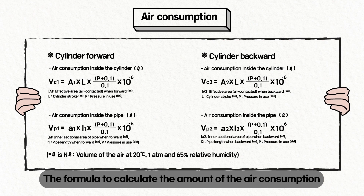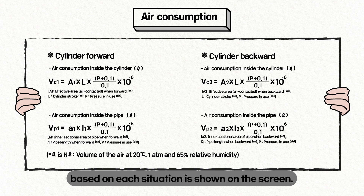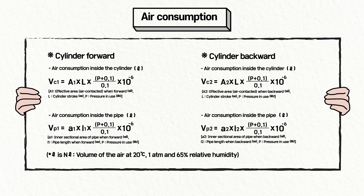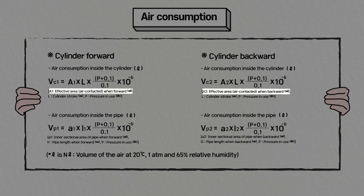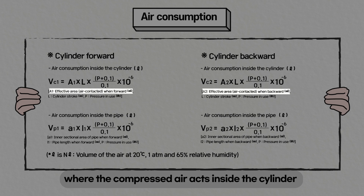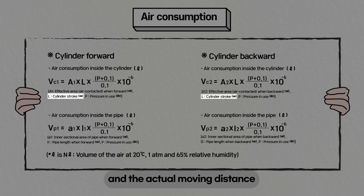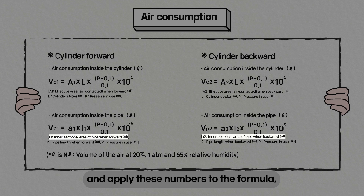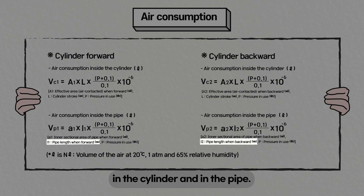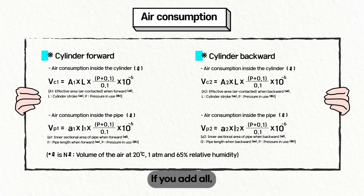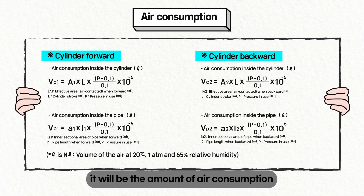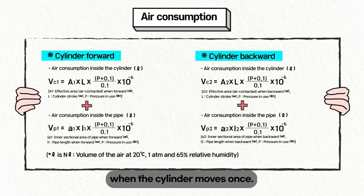The formula to calculate the amount of air consumption based on each situation is shown on the screen. If you analyze the area where compressed air acts inside the cylinder and the actual moving distance of the compressed air — and apply the same for the pipe — and input these numbers into the formula, you can figure out the air consumption in the cylinder and in the pipe. Adding all values together gives the total air consumption when the cylinder moves once.